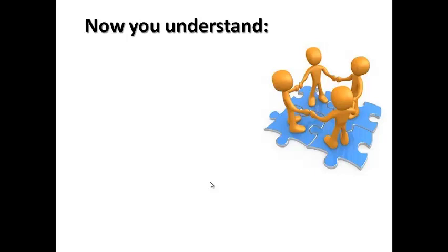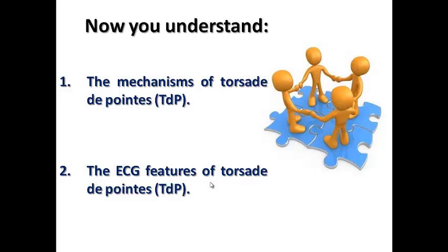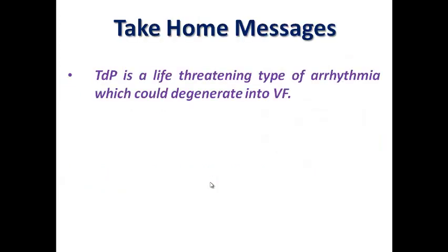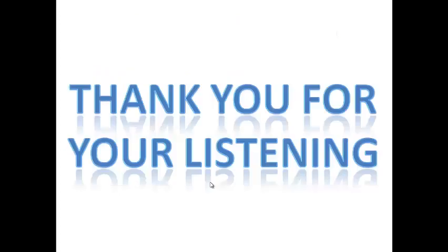At the end of this lecture, we understand the mechanism of Torsade de Pointe — how triggered activity and re-entry combine to result in this ECG pattern — and the ECG features of TdP. The take-home message: Torsade de Pointe is a life-threatening arrhythmia which can degenerate into VF. It is a spot diagnosis on ECG that should raise attention to underlying prolonged QT interval, prompting a search for its causes, correction, and intervention with antiarrhythmic medication. Thank you very much for listening.